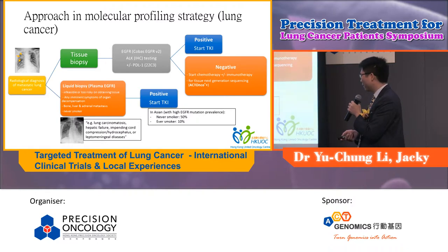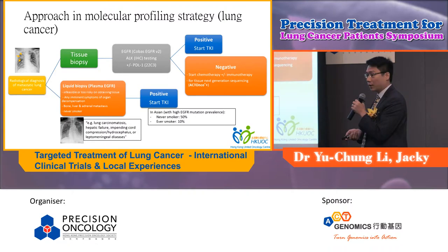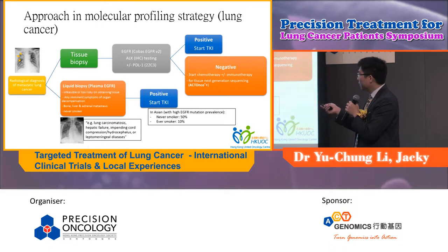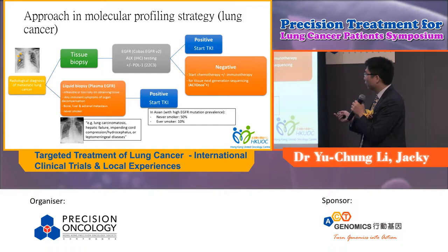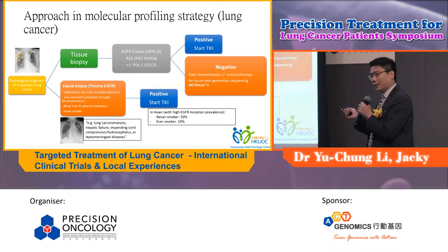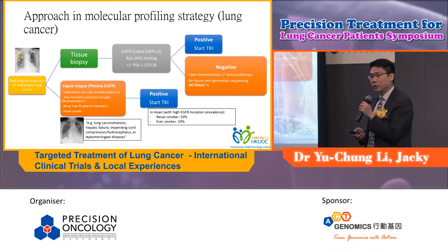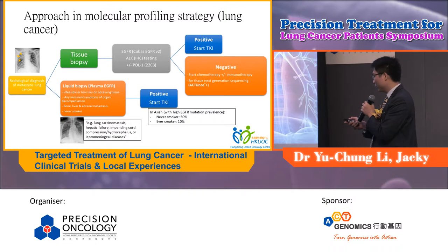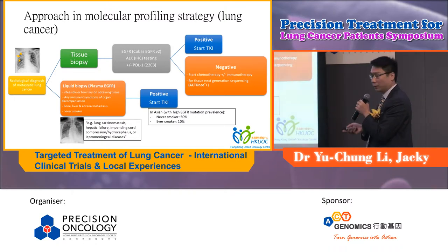For patients with high EGFR mutation prevalence — for never-smokers, there's a 50% chance of detecting an EGFR mutation; otherwise just 10%. For tissue biopsy, I would just do IHC for ALK and the cobas EGFR test version 2 for EGFR mutations. For patients negative on both, I would send for next-generation sequencing. I would not wait for the result to come back before initiating treatment; for most patients I would start with combination immunotherapy with chemotherapy.